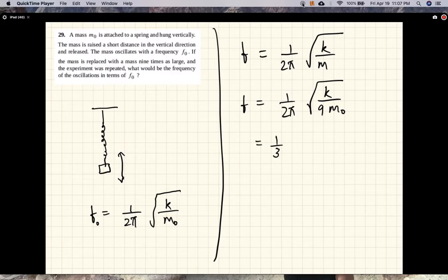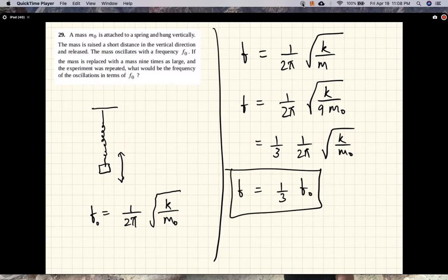...root of nine is three, so one-third times 1 over 2π times square root of k over M, which is one-third f₀. So the new frequency is one-third of the original frequency. All right, that finishes that problem.